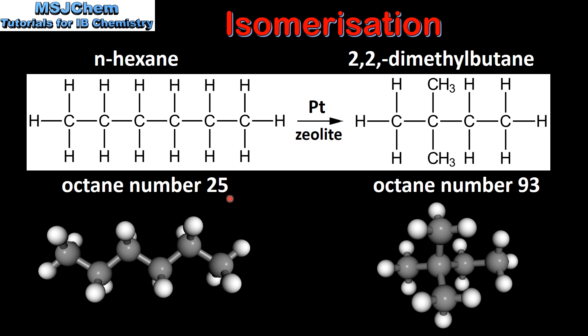So once again we can see that branched isomers have higher octane numbers than straight-chain isomers.